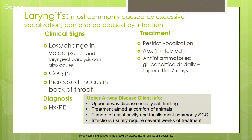Laryngitis is most commonly caused by excessive vocalization, but can also be from infection. Clinical signs include loss or change in voice — note that rabies can cause laryngeal paralysis — a cough from irritation, and increased mucus because goblet cells respond to epithelial inflammation. History and physical exam give the diagnosis. We need to restrict vocalization — the more they vocalize the worse it becomes.